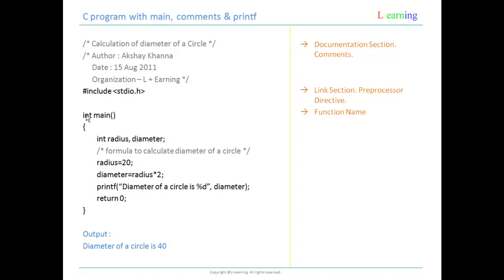Then it is followed by the main function. If you see here, main is followed by brackets — it is a function name. If you are writing a C program, it must have at least one function, and if it is only one function then it has to be main. Main function by default returns an integer value, which is why we have written integer main. The function start is denoted by an opening brace and there is a closing brace which closes it.